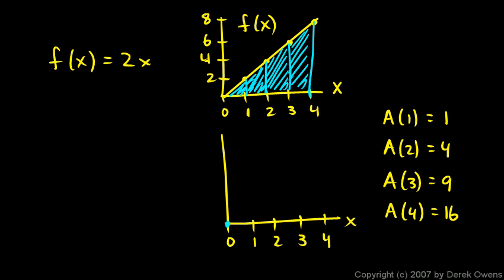So A of 4 is 16. So let's plot these values. We need to go up to 16. So that will be 8 there. And 4 and 12. Just marking off our vertical axis there. So A of 1 is 1. That will be way down here. A of 2 is 4, about right there. A of 3 is 9.